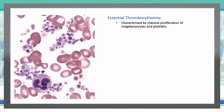In essential thrombocythemia, we are going to see platelet clumps, with massive proliferation of megakaryocytes and platelets. There are increased numbers of platelets which may be large or otherwise abnormally formed.